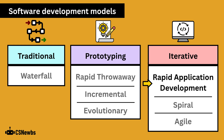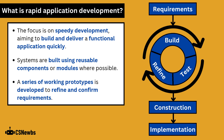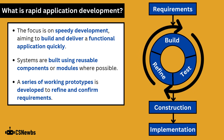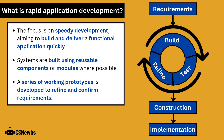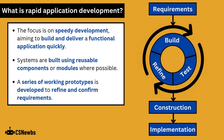Rapid application development, usually just known as RAD, is an iterative type of software development, although it still relies heavily on the use of prototypes. With RAD, the focus is on speedy development, aiming to build and deliver a functional application as quickly as possible. Systems are built using reusable components or modules where possible, and a series of working prototypes is developed to refine and confirm the requirements.